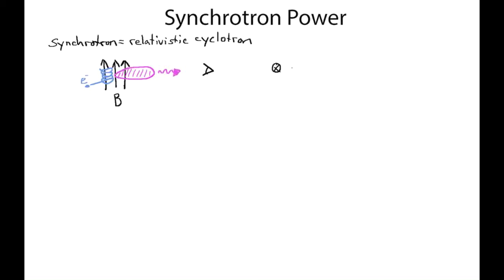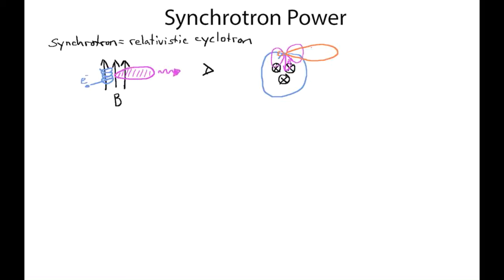Previously, we examined how, looking at a magnetic field with field lines going into the page and an electron traveling in a circular orbit, we derived that even though in the electron's reference frame it thinks it's emitting cyclotron power — with a characteristic symmetric pattern forward and backward relative to the direction of acceleration toward the center of the circle — for synchrotron radiation, when the electron moves at relativistic speeds, this radiation pattern becomes highly beamed in the forward direction, with very little power radiated backward and a much narrower beam.